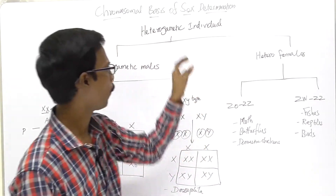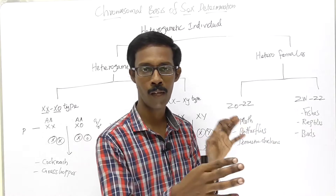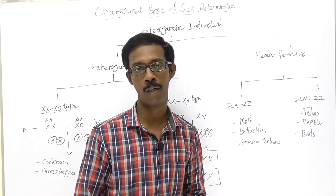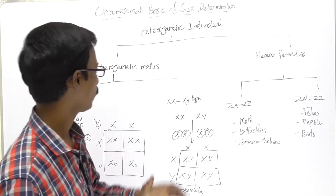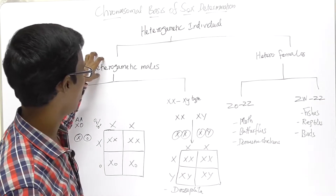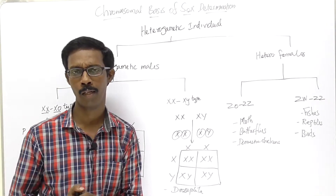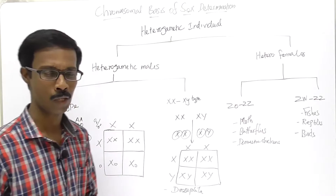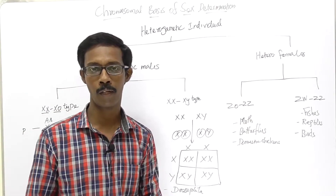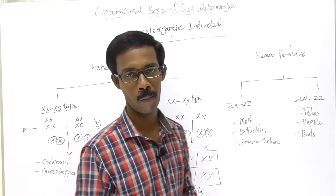So what do we conclude? Heterogametic individuals can be either male or female, based on the animal or species type. Heterogametic males are one type, and heterogametic females are another type.